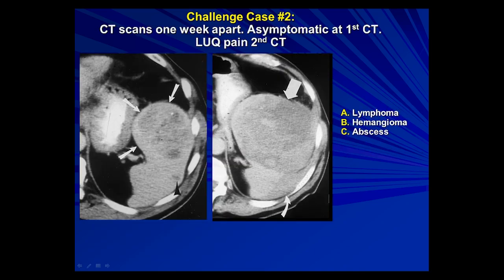Challenge case number two: scans one week apart. On the left is the first scan. The patient was asymptomatic — it was an incidental finding. On the scan on the right, about a week later, the patient presented with acute left upper quadrant pain. Giving you three possibilities: lymphoma, hemangioma, and abscess.